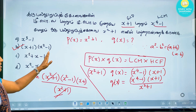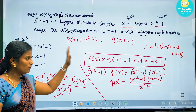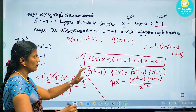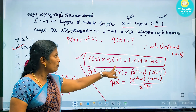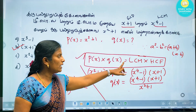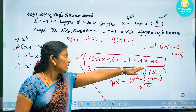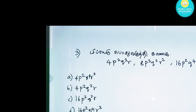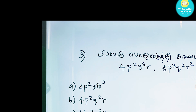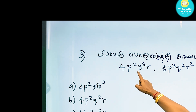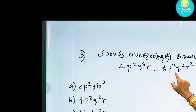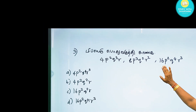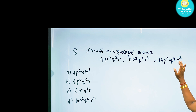So the answer is (x + 1)(x² - 1) — option B. Using the rule: product of two polynomials equals LCM multiplied by HCF. Now, for the third question: